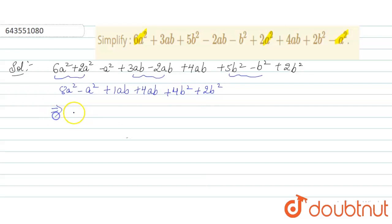So the answer which we get is 7a² + 5ab + 6b². So the simplification of the given equation is 7a² + 5ab + 6b². Thank you.